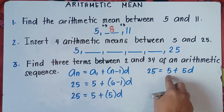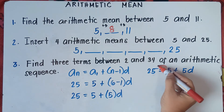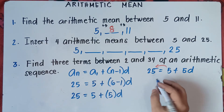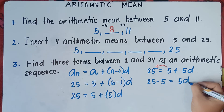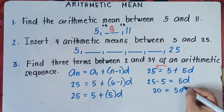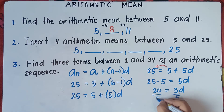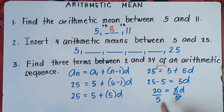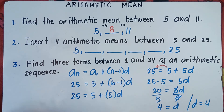We need to isolate 5d to get the value of d. Transpose 5 from right to left, changing the sign from positive to negative. So 25 minus 5 equals 5d, which gives us 20 equals 5d. Divide both sides by 5 to get d equals 4. So our common difference is 4.